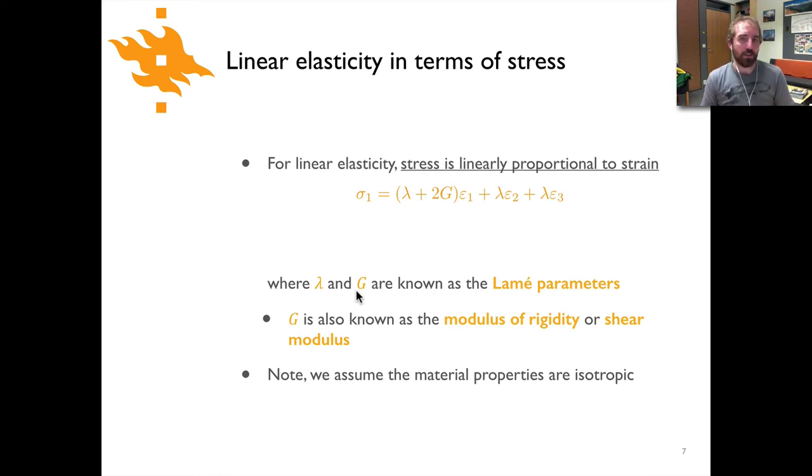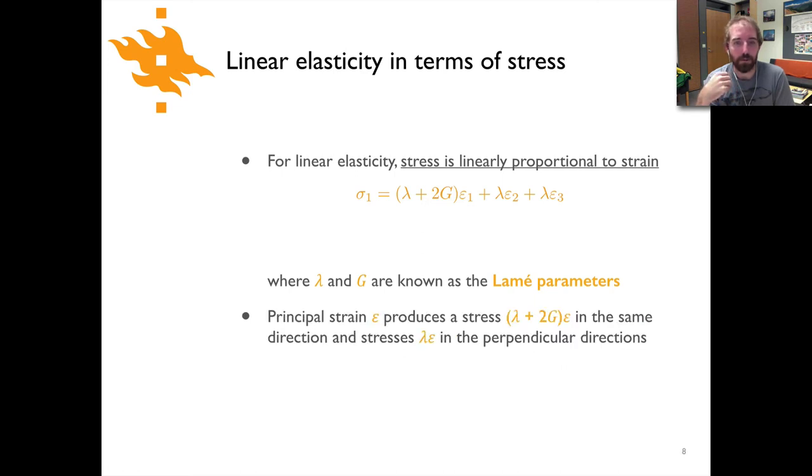These are elastic material properties of the rock, and G is something that's sometimes referred to as the modulus of rigidity or shear modulus as we've seen in one of the previous slides. And just to note here, we're assuming that they're isotropic material properties.